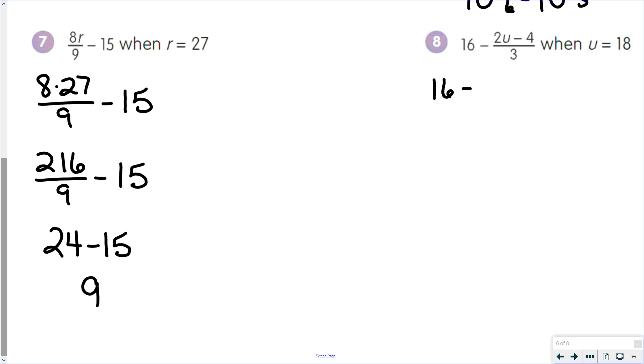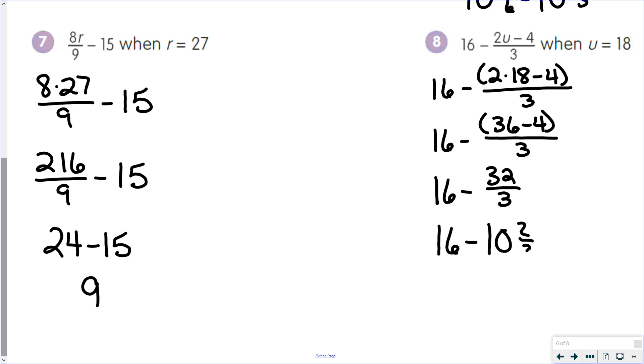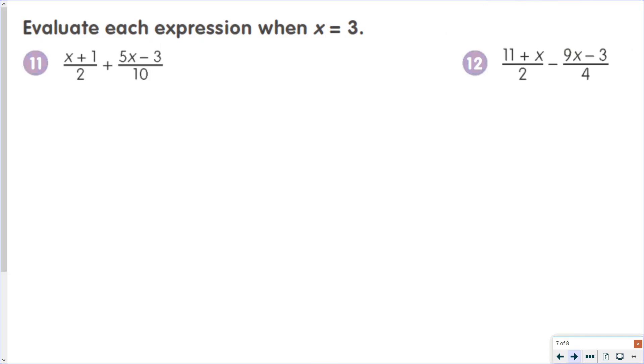So 16 minus 2 times 18 minus 4 all over 3. So we have 16 minus 36 minus 4 over 3. 16 minus 32 over 3. 16 minus 10 and 2 thirds, which is 5 and 1 third. So you'll see that evaluating some of these problems does take a little bit of time, especially if you do one step at a time. But doing one step at a time helps ensure that you are getting a correct answer.